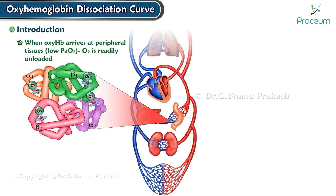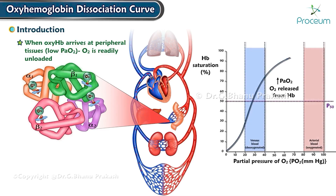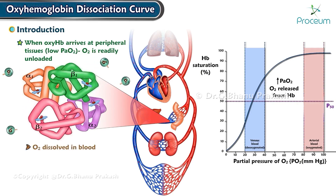When oxyhemoglobin arrives at peripheral tissues that have a low partial pressure of oxygen, the oxygen is readily unloaded — going down the curve as the partial pressure of oxygen drops and oxygen is released from the hemoglobin. Oxygen is now dissolved in the blood and ready to be diffused into tissues for aerobic metabolism.